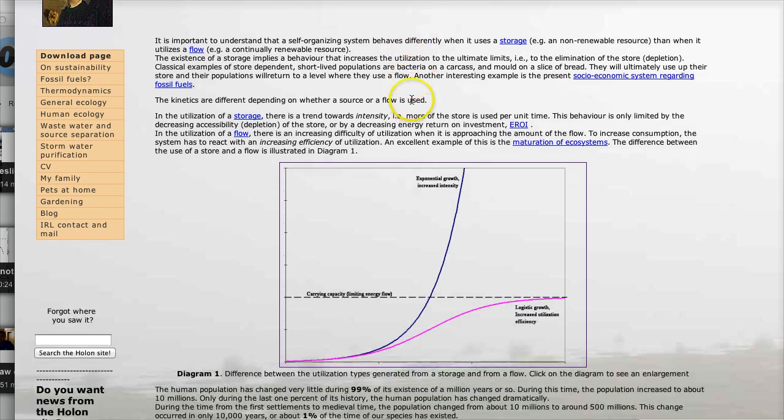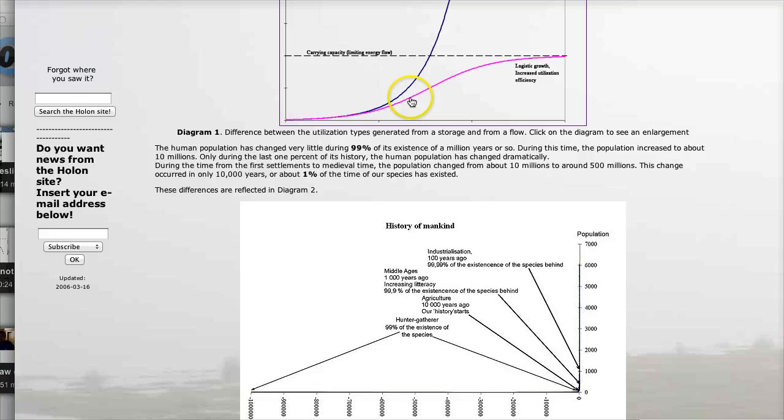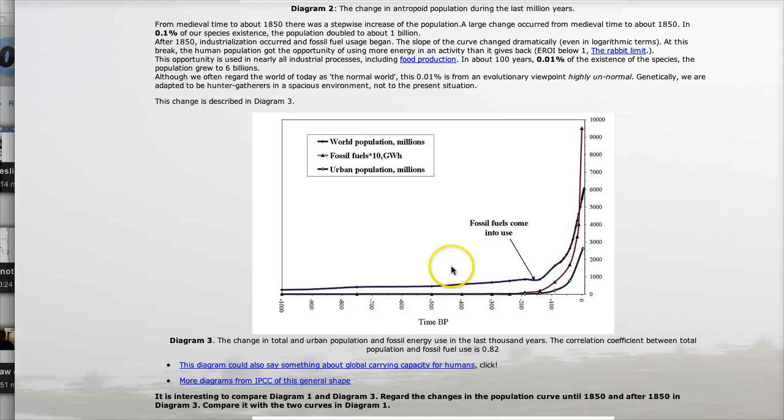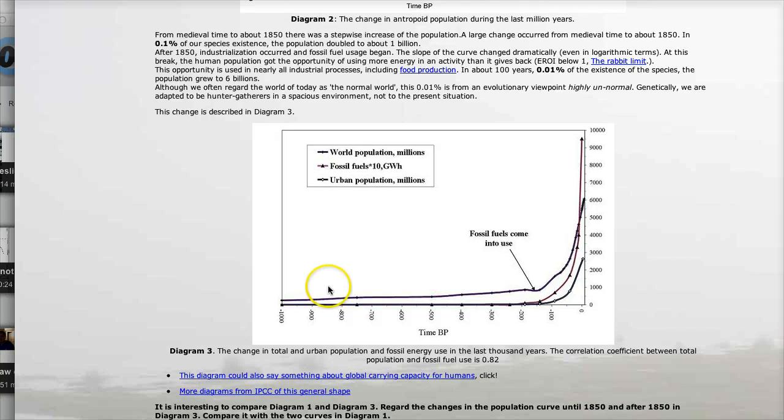So the example I wanted to show you was how the population growth has changed based on fossil fuels. So here's a cool picture that they found. Here is the total urban population and fossil fuel use.